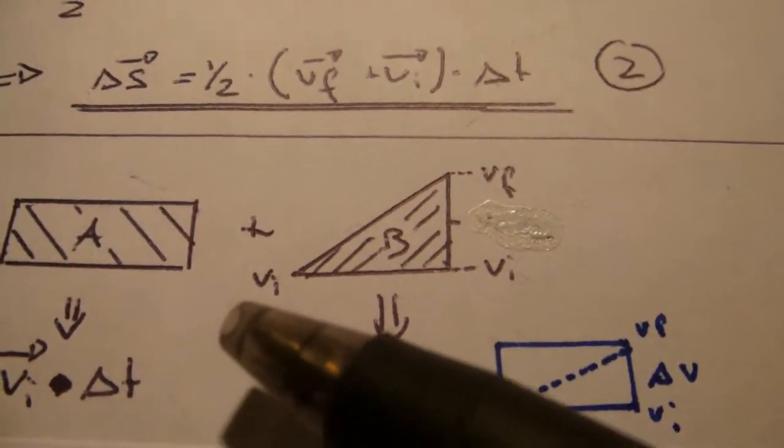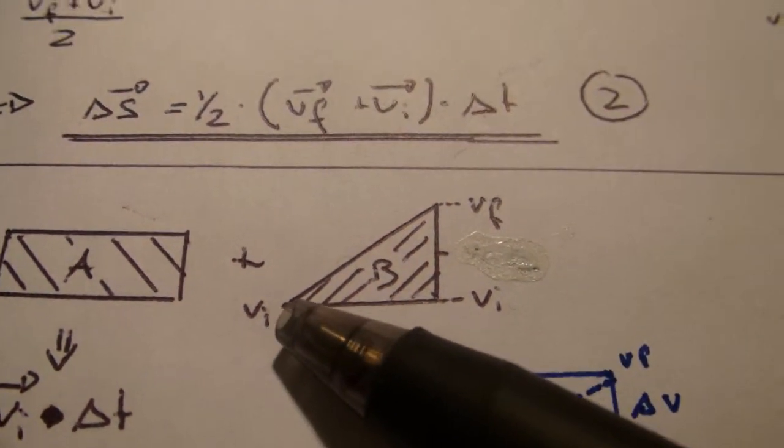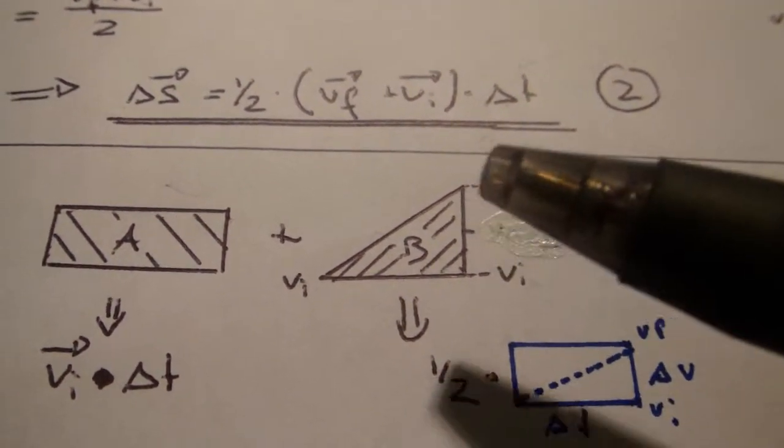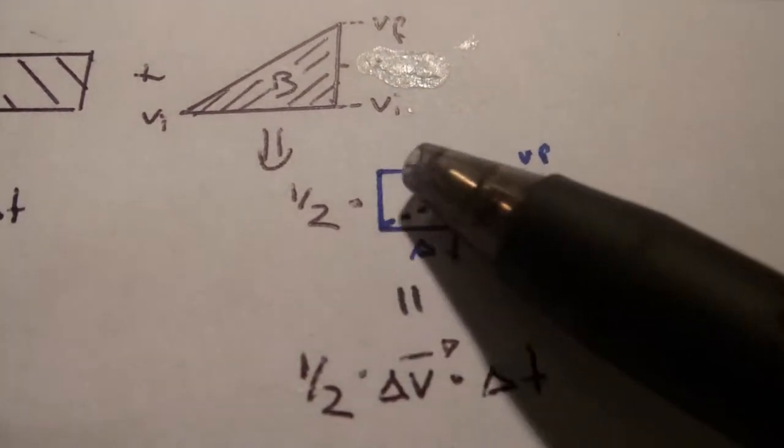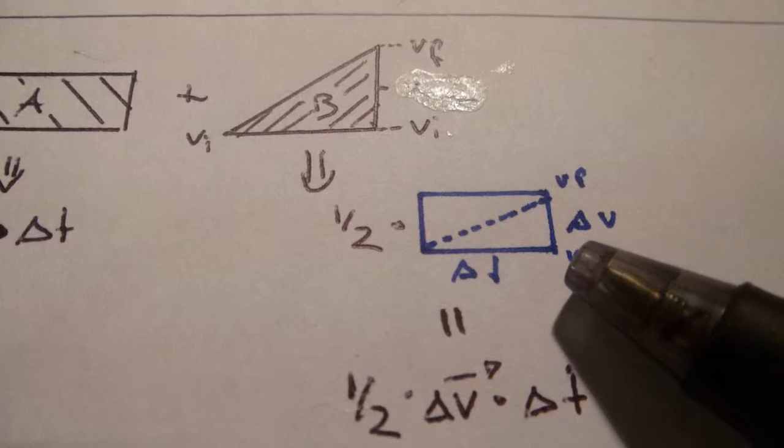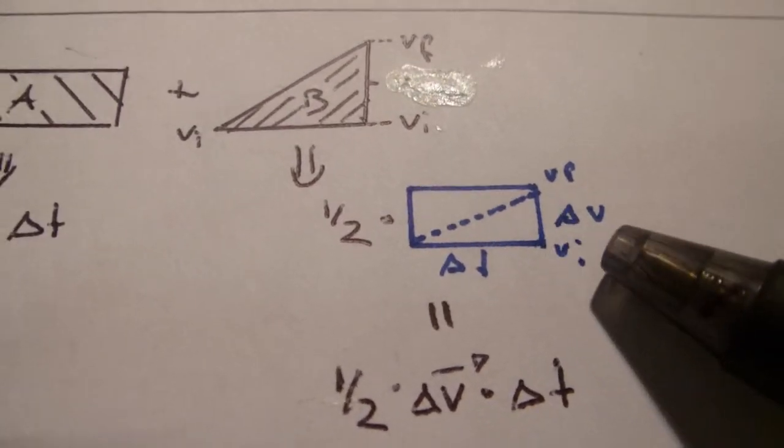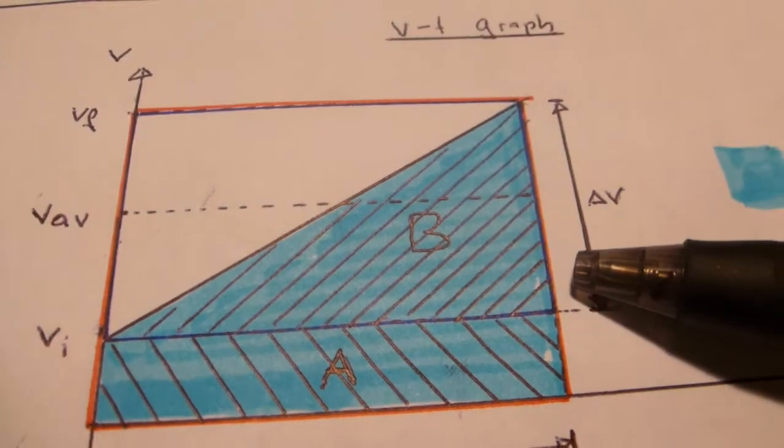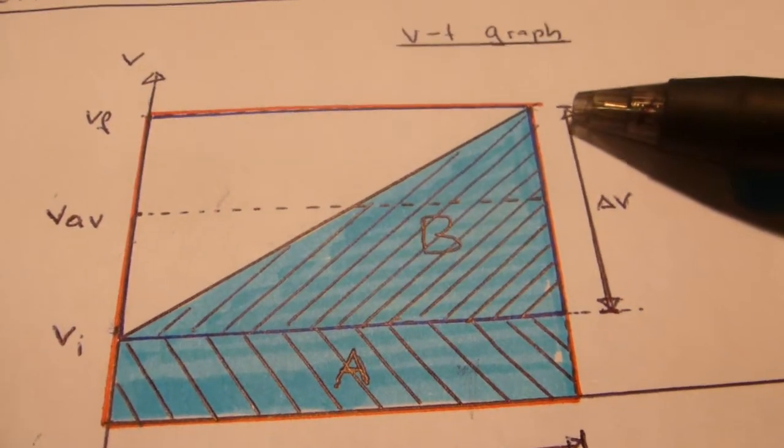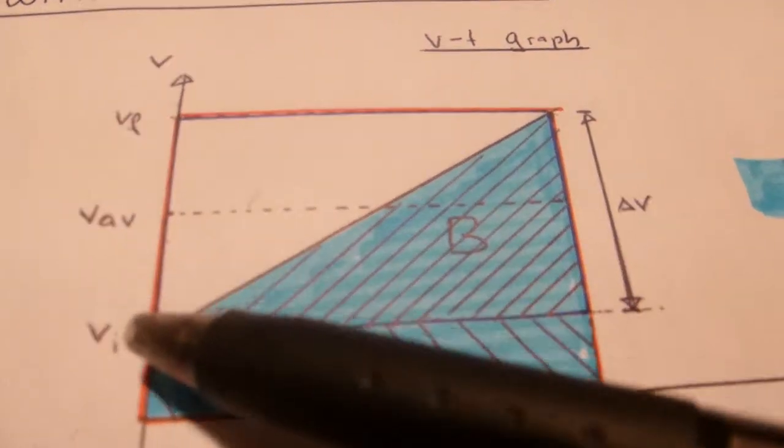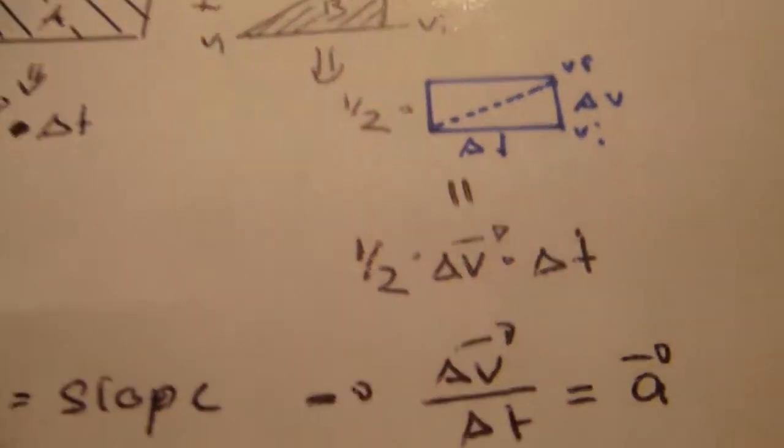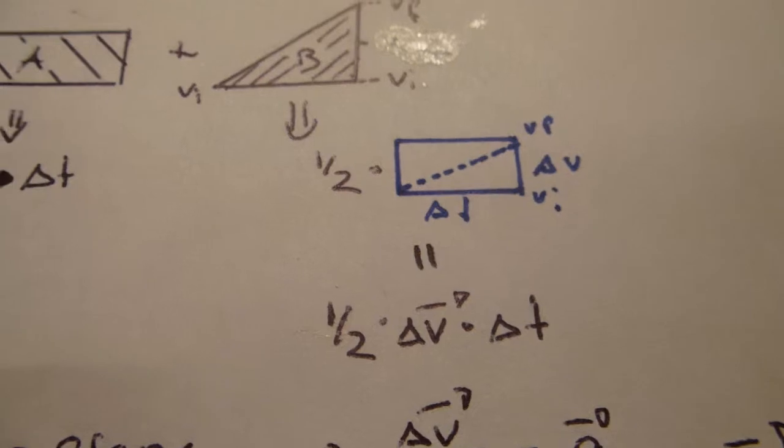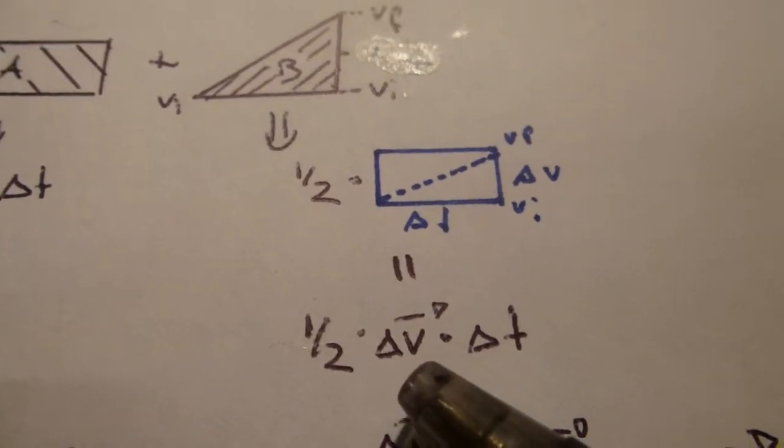The other one is we have V initial down there and V final up here. This is exactly half of a square with delta T on one side and delta V, which is V initial to V final on the other side. If you look at it over here, delta V over here and the big square here. It's exactly half of it. Here we have one half delta V delta T.